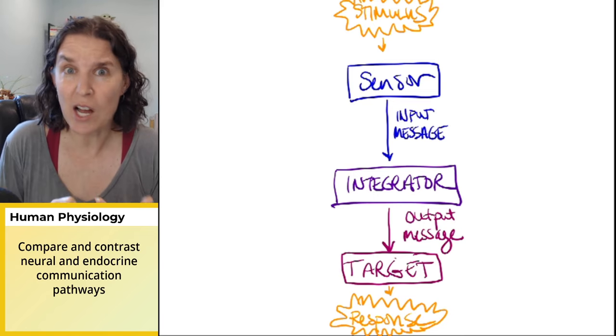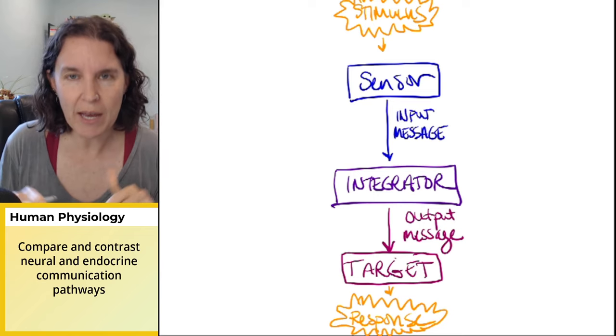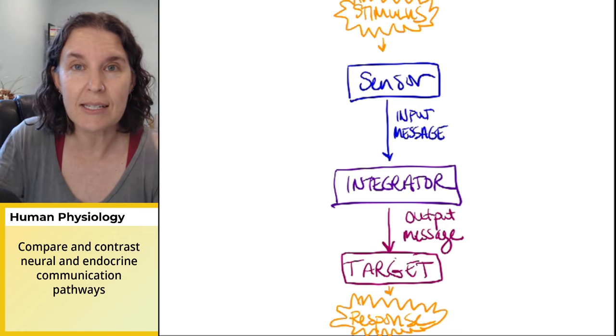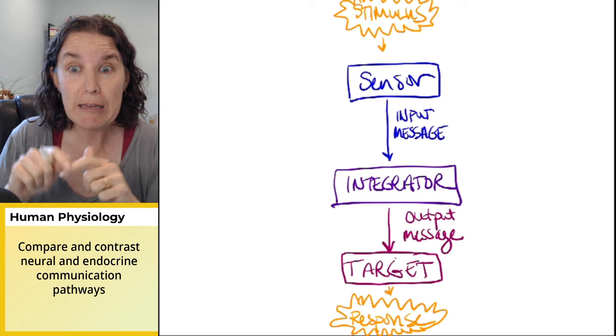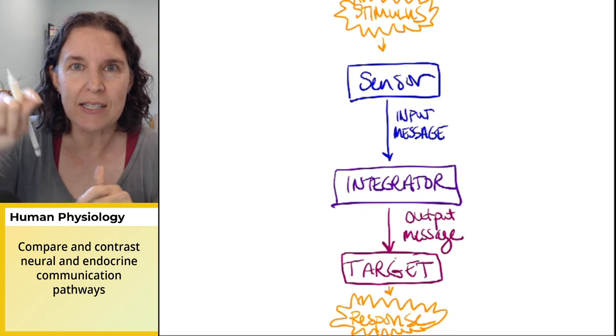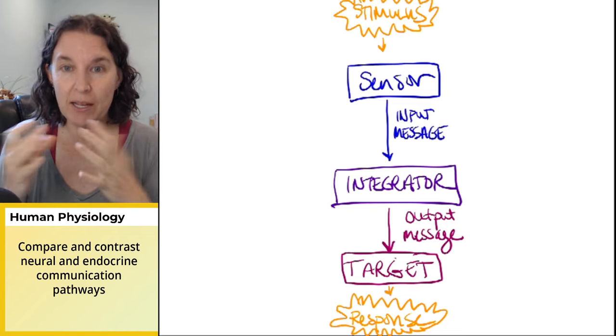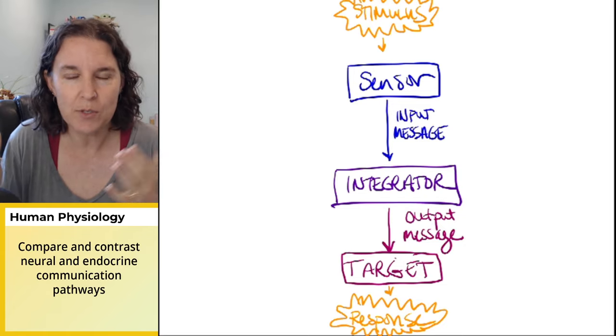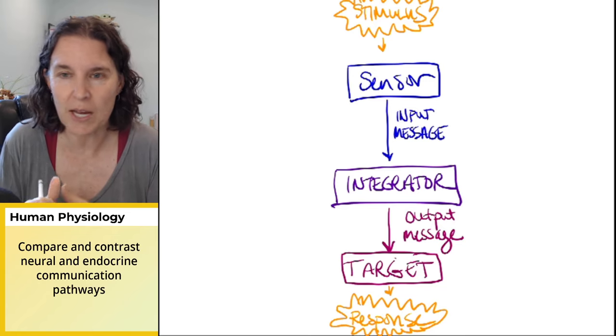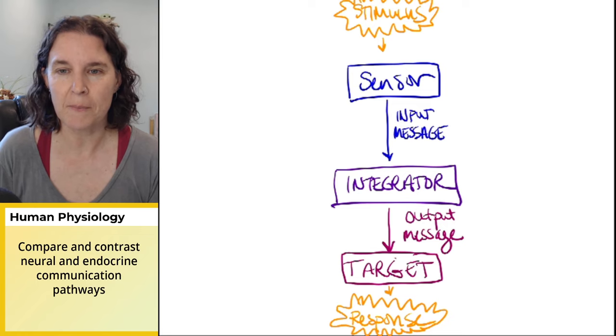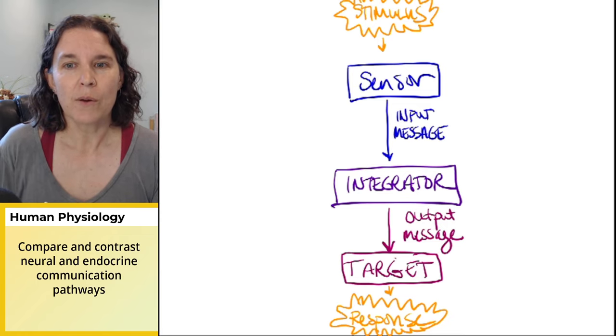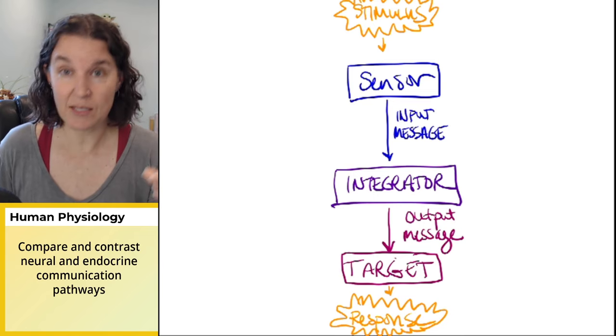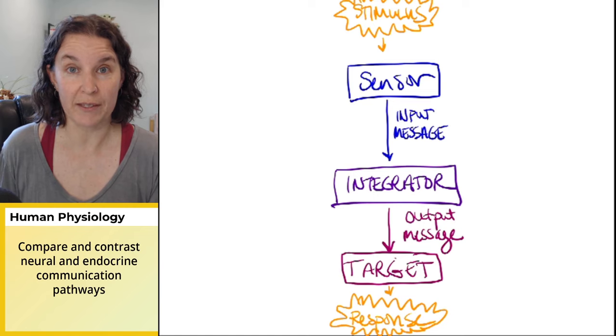The integrator is going to generate an output message that travels to a target. I'm choosing this word very carefully. The target is going to do something. The target receives that output message from the integrator and says, I hear you, I'm in, I will take care of business for you. And the target facilitates a response. The response then is in play. We've talked about feedback loops. If the response decreases the stimulus, that's a negative feedback loop. If the response increases the stimulus, that's a positive feedback loop. Feedback loops aren't always there. You can still have communication pathways without having a feedback loop. The response is the point of the whole thing.